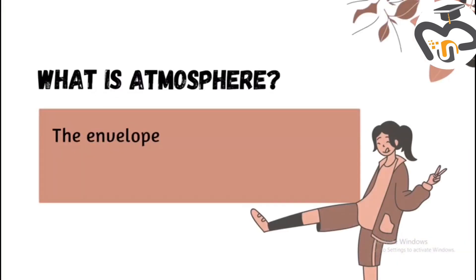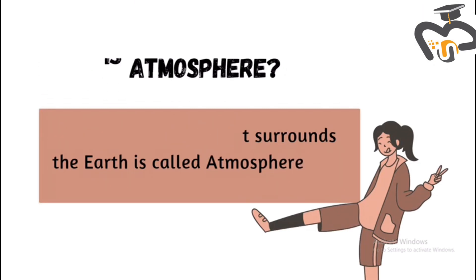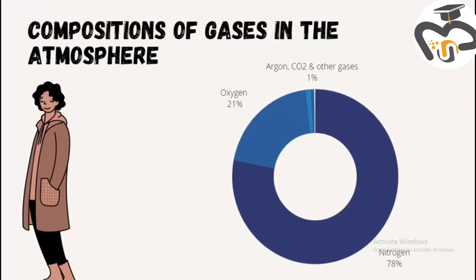So, what is the atmosphere? The envelope of air that surrounds the Earth is called the atmosphere. In the atmosphere, there are particular gases. 78% is covered by nitrogen, 21% is covered by oxygen, and 1% is covered by argon, carbon dioxide, and other gases.